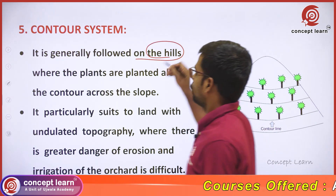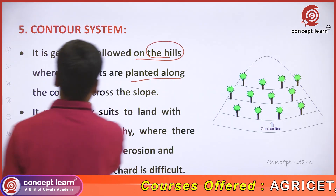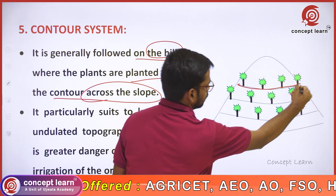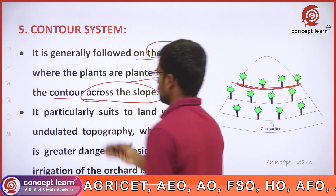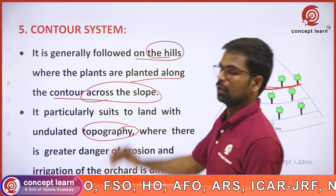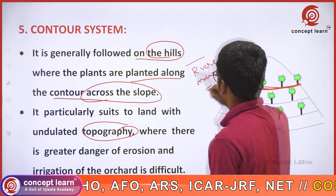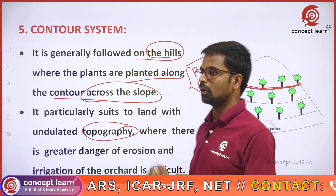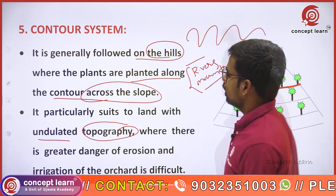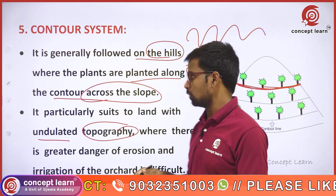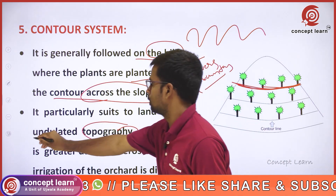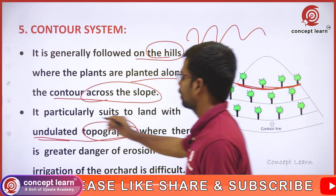It is generally followed on hills, where plants are planted along the contour, across the slope. It particularly suits land with undulated topography. Topography means where we have rivers, mountains, and accumulated terrain. Undulated means up and downs. In this topography, where we have ups and downs, we follow the contour system.